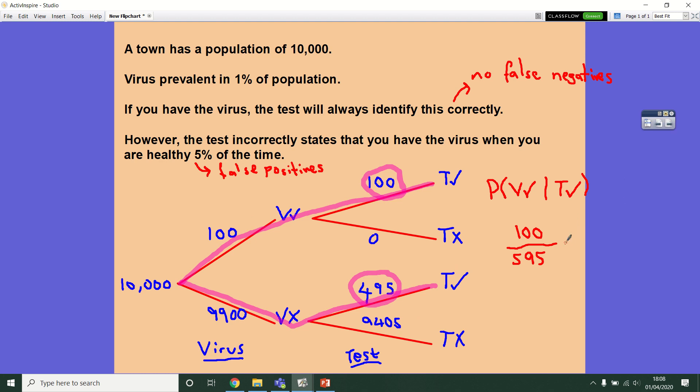And that should be quite an alarming fraction to look at because that's roughly 16.8%. So even though the information says that the test is highly effective, in fact, given the low prevalence of the virus in the population, this is what causes this paradox where actually, if you've got a positive test, the chance that you have the virus is very low.